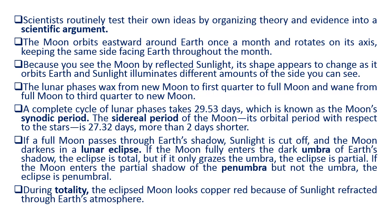If a full moon passes through Earth's shadow, sunlight to the moon is cut off and the moon darkens in a lunar eclipse. If the moon fully enters the dark umbra of Earth's shadow, the eclipse is total; but if it only grazes the umbra, the eclipse is partial. If the moon enters only the partial shadow — the penumbra — but not the umbra, the eclipse is a penumbral eclipse. During totality, the eclipsed moon looks copper-red because of sunlight refracted through Earth's atmosphere.